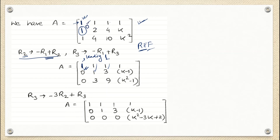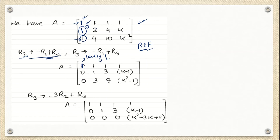My next focus is the element in row 3 below the leading 1, which should also be 0. I perform the same operation R3 → R3 minus R1. This gives: 1 minus 1 = 0, 4 minus 1 = 3, 10 minus 1 = 9, and K squared minus 1 = K²−1. So the new row 3 becomes [0, 3, 9, K²−1].